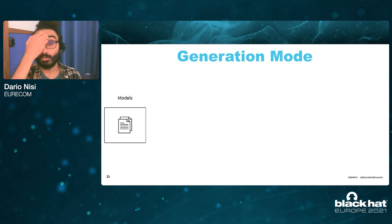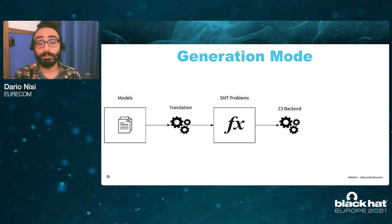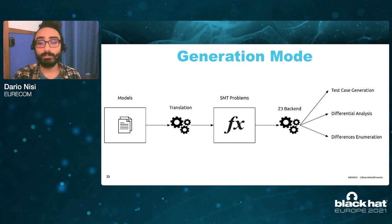Let's move on to the generation mode. Generation mode is more complex than validation mode. We start from some models, but we cannot really generate files directly from our models — we first need to translate them into something we can work on mathematically, and we do that by translating models into SMT problems. The SMT problems are then fed to the Z3 backend, which is based on the Z3 SMT solver. The Z3 backend can perform a lot of tasks: test case generation, differential analysis, differences enumeration, and corner case generation.